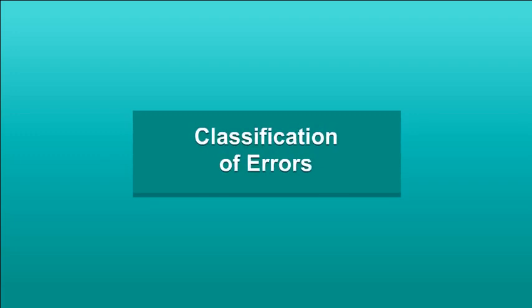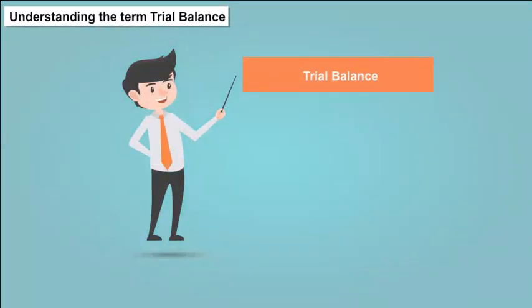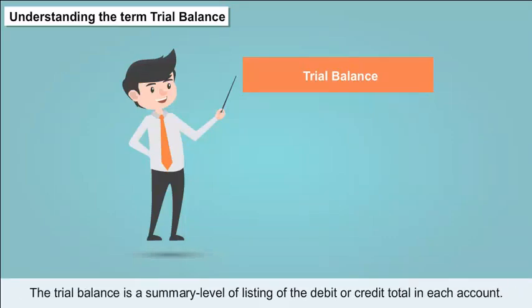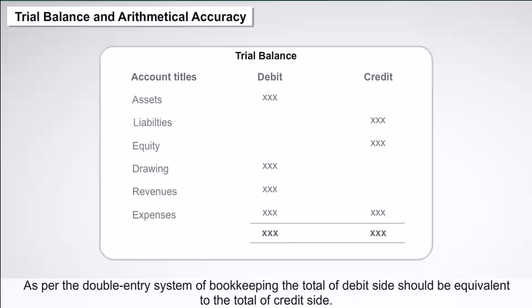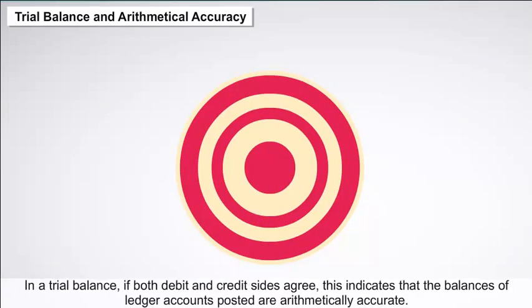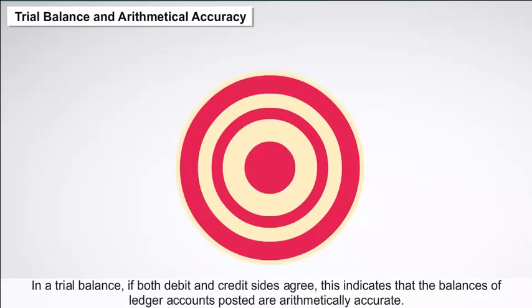Classification of Errors: The trial balance is a summary-level listing of the debit or credit total in each account — a statement of balances remaining in each ledger account, classified as debit and credit balances. As per the double entry system of bookkeeping, the total of the debit side should be equivalent to the total of the credit side. If both debit and credit sides agree in a trial balance, this indicates that the balances of ledger accounts posted are arithmetically accurate.